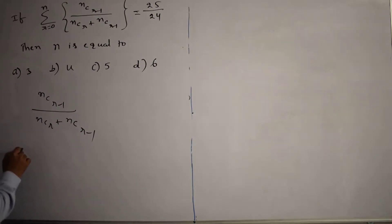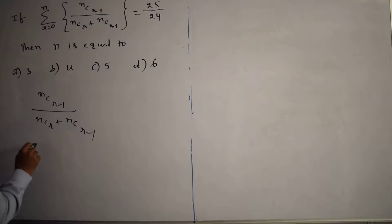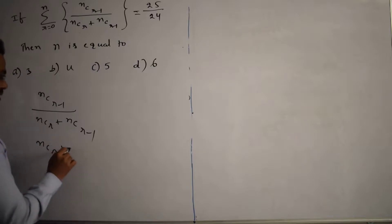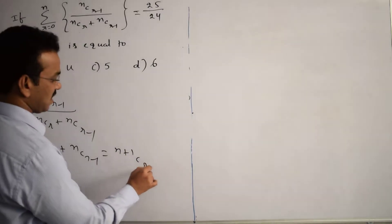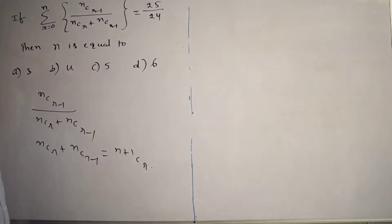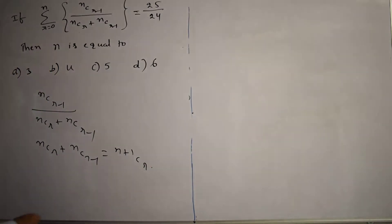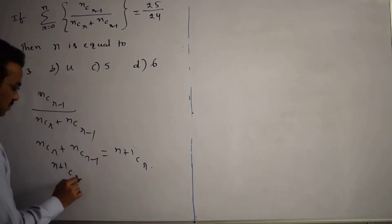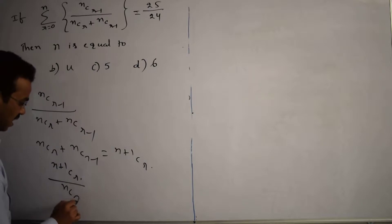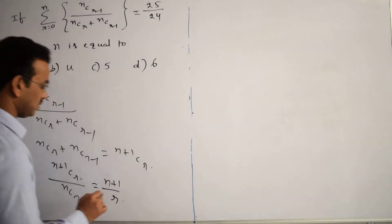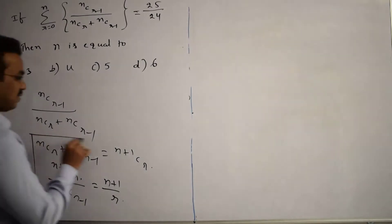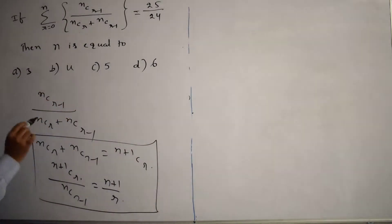What formulas are available for binomial coefficients? There are two: first, NCR + NCR-1 equals N+1CR. Second, (N+1CR) divided by (NCR-1) equals (N+1) by R. These two are very popular and famous results in binomial theorem.